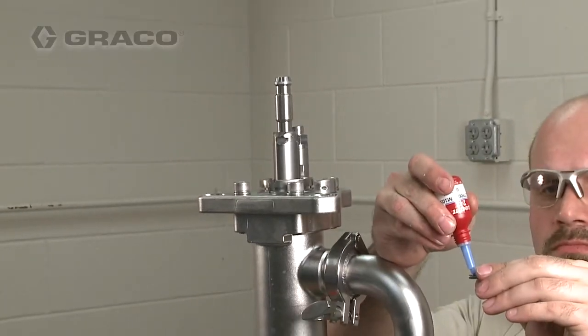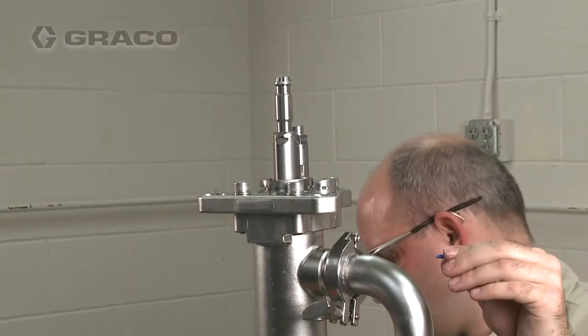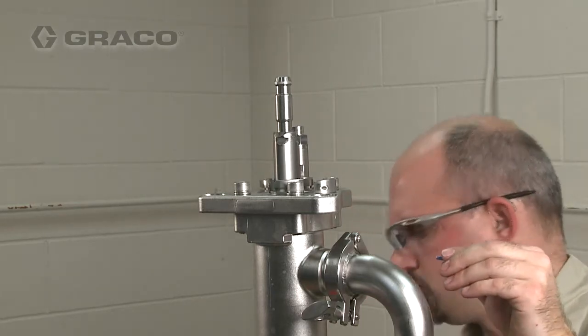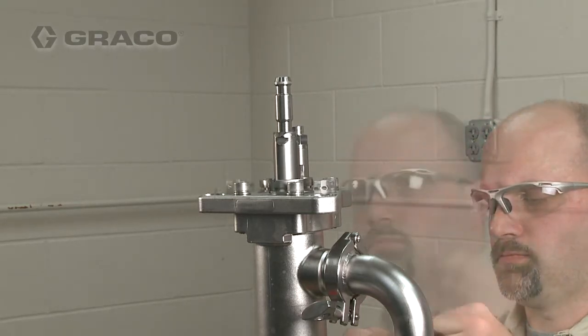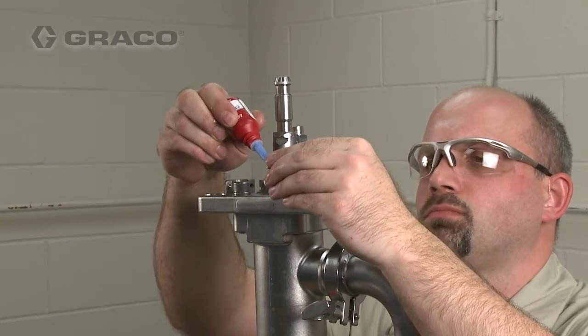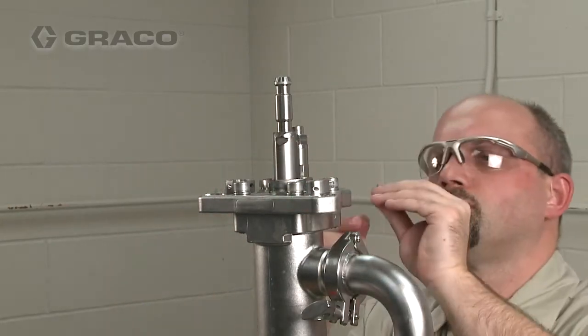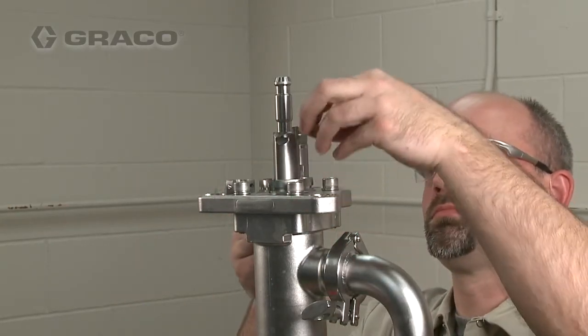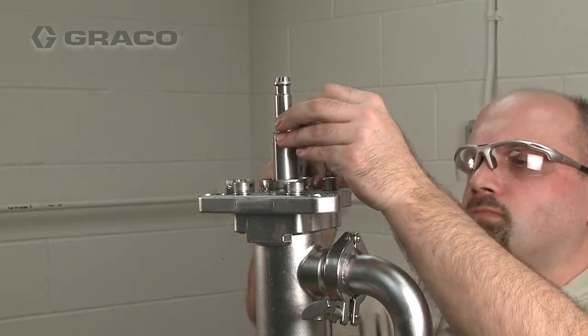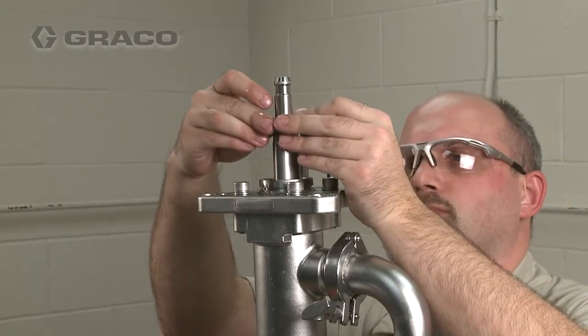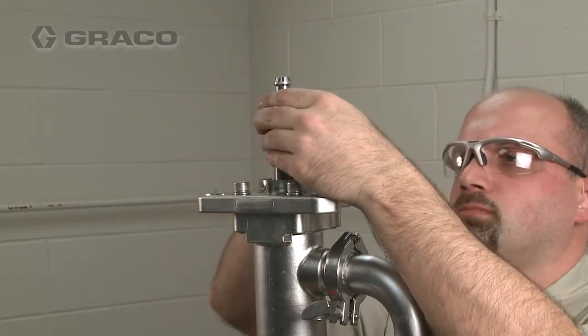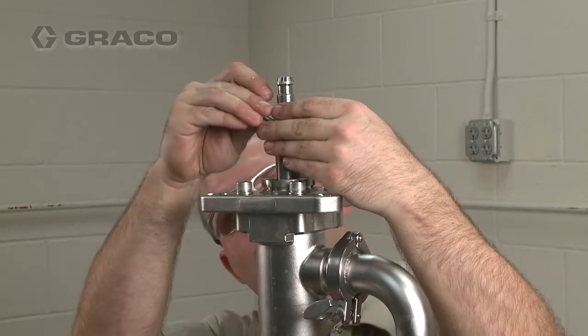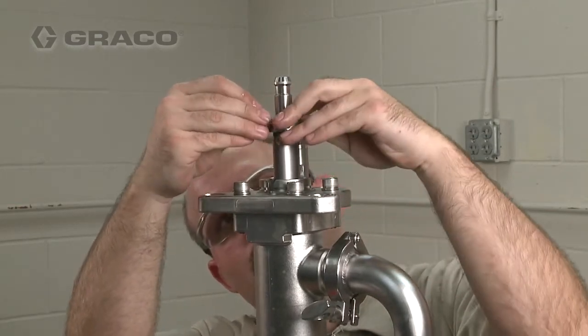Apply a medium strength thread sealer to the retaining collar's screws. Install the retaining collar, then tighten and torque the screws between 18 and 22 inch pounds.